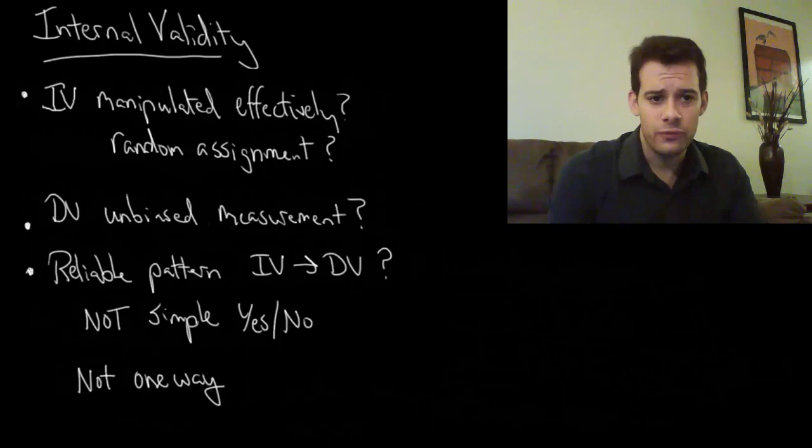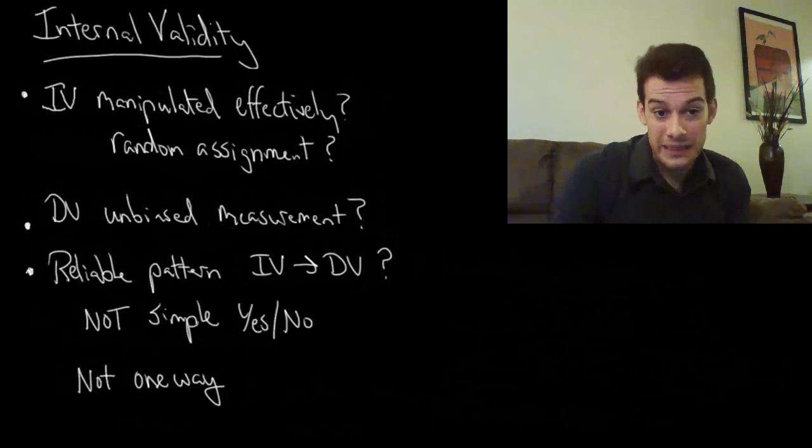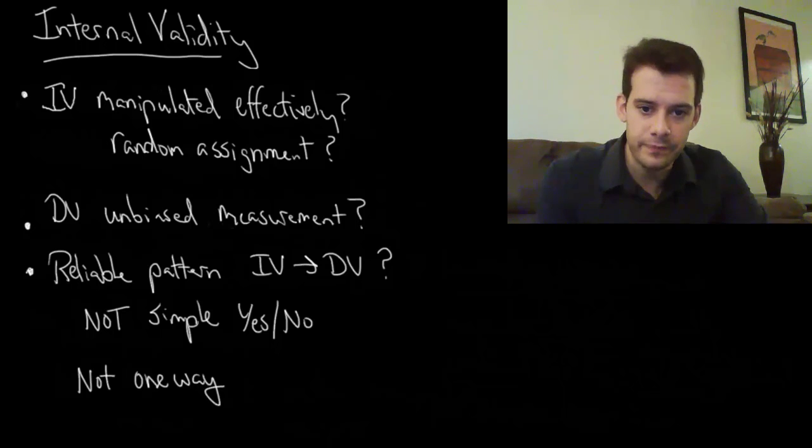Even if we decide that we have internal validity, that we've done all of these things correctly, and we believe that we have an effective manipulation, an unbiased measurement, and a clear relationship, we still have to be careful about the conclusions that we draw. Even when we have internal validity, our conclusions must be limited.